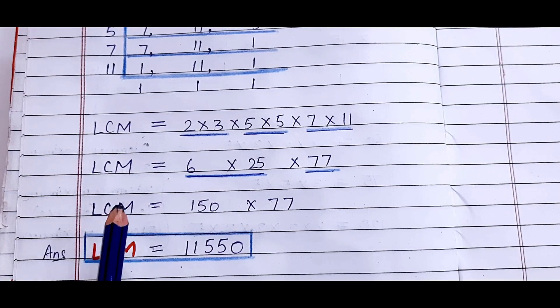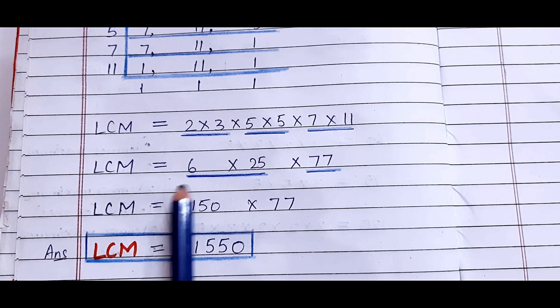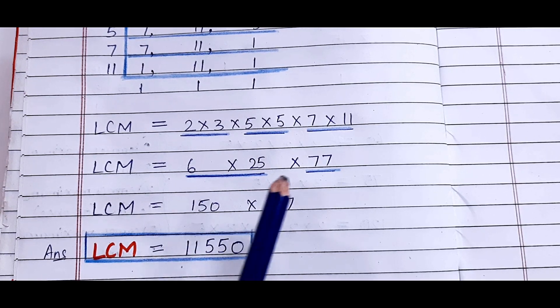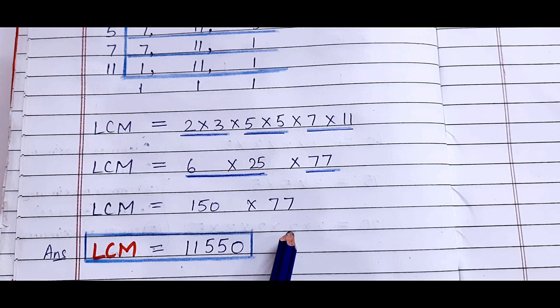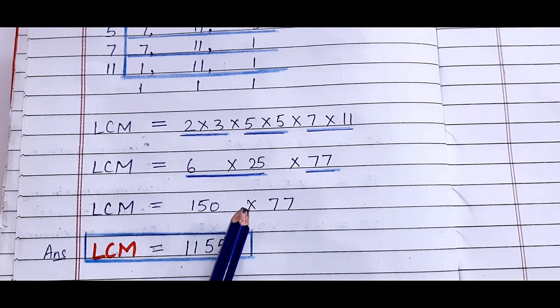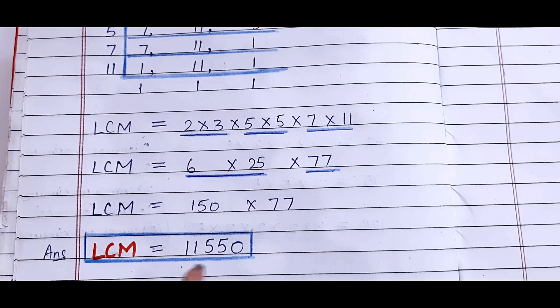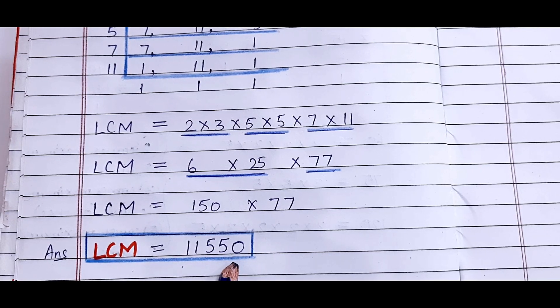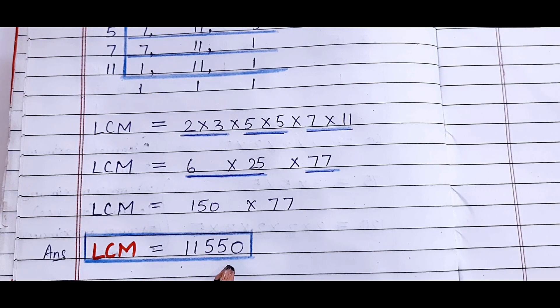Now see here, 6 times 25 is 150, and 77 is left, so we will copy it. Now LCM equals 150 multiplied by 77, and the answer will be 11,550. So the LCM of 70, 110 and 150 is 11,550. Children, I hope it is clear to all of you. Thank you class.